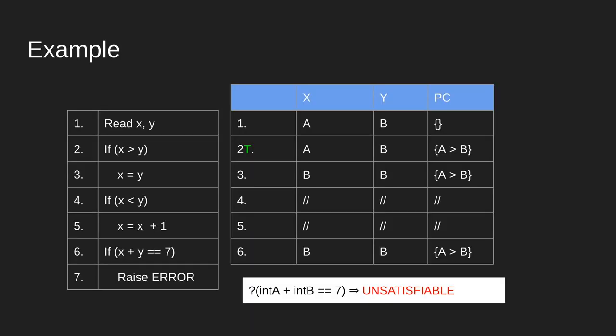So let's begin with a simple example of symbolic execution. Here we have a seven line program that reads two integers x and y and raises an error if certain conditions holds regarding those two variables. There are kind of two parts to the symbolic execution of a program. There's the actual execution of it, and then the symbolic constraints that are put on those inputs, and then the solving of those constraints.